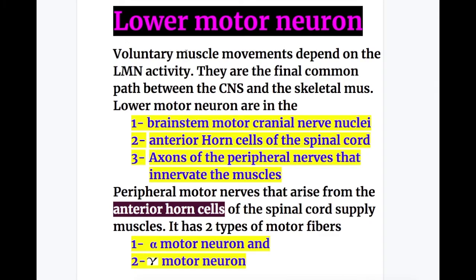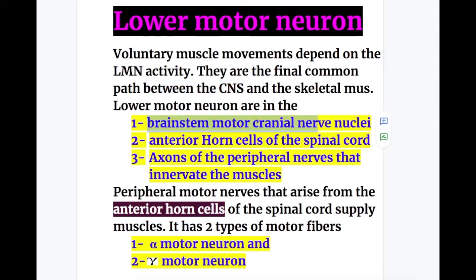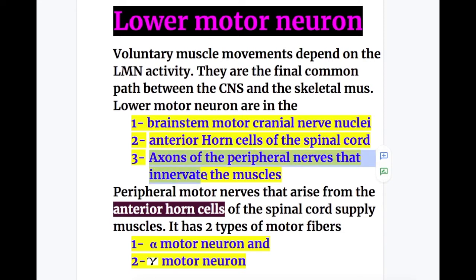Lower motor neuron. Voluntary muscle movements depend on lower motor neuron activity — they are the final common path between the CNS and muscles. Lower motor neurons are located in: number one, the brainstem motor cranial nerve nuclei; number two, the anterior horn cells of the spinal cord; and number three, the axons of peripheral nerves that innervate the skeletal muscles.